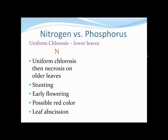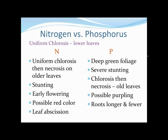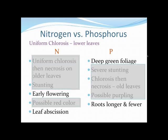Looking at nitrogen and phosphorus symptoms, we have uniform chlorosis, stunting, early flowering, possible red color, and leaf abscission with nitrogen. Comparing that to phosphorus, many of those symptoms overlap. So we want to focus on the symptoms unique to each one. For nitrogen: early flowering and leaf abscission. For phosphorus: deeper green foliage initially, and fewer and longer roots.